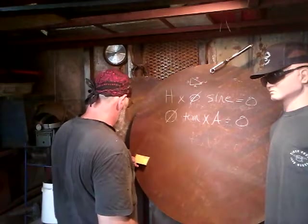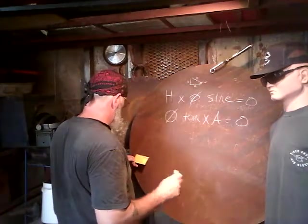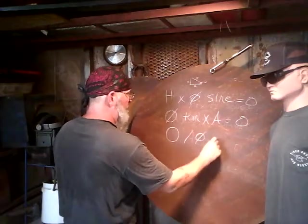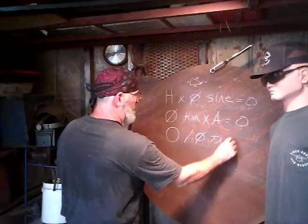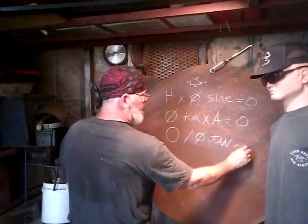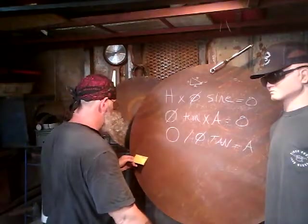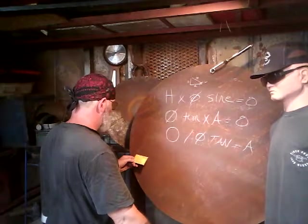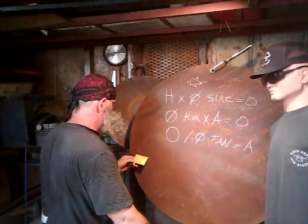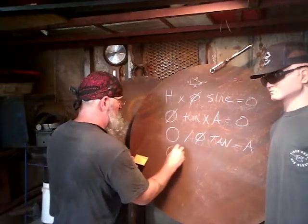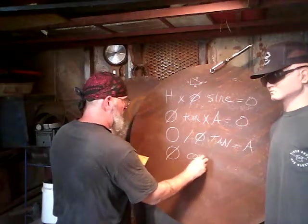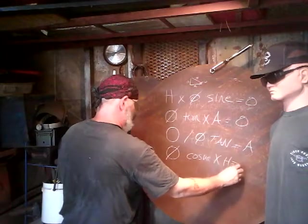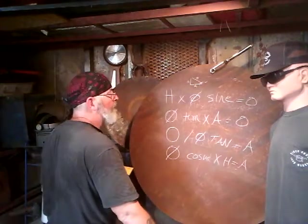To find A, if O and degree are known: O divided by degree — tangent — equals A. Again, very rare. To find A, if H and degree are known: degree cosine times H equals A. Very rare.